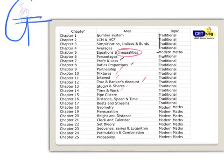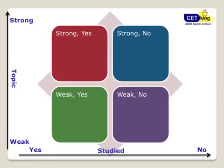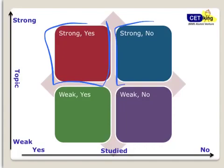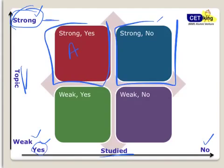I want you to pause the video here. I'll give you the list and show you how to identify it, then we'll go through that list. The task is to identify the weak area, then I'll go to the second part — how to improve it. Make a matrix with four boxes: topic-wise strong or weak (I am strong in this topic / I am weak in this topic), and studied-wise (yes I have studied this / I have not studied this). For example, if I have studied averages and it's my strong area, I'll count it in the studied-and-strong box.